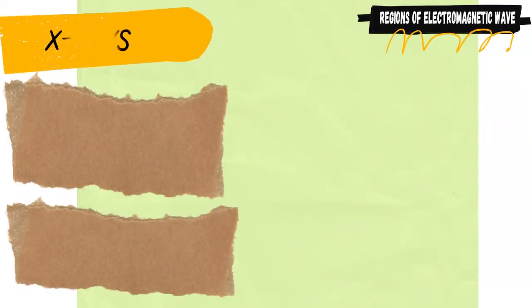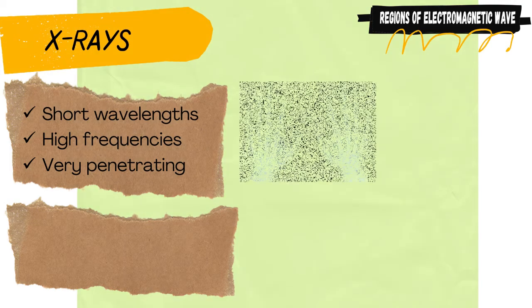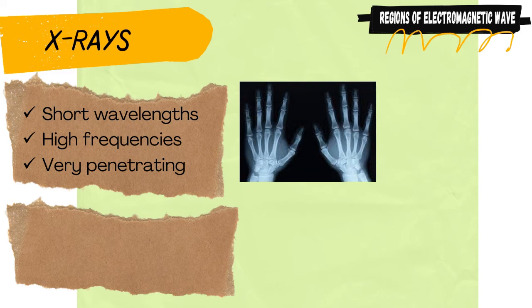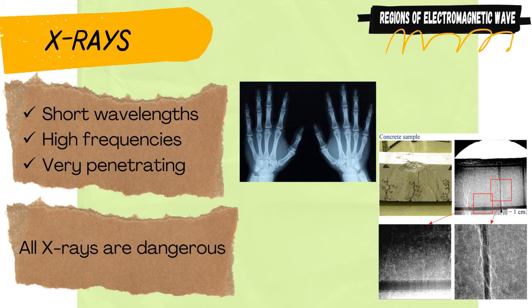X-rays have short wavelengths and high frequencies and are very penetrating. They are produced by the rapid acceleration of electrons in X-ray machines that collide with atoms, causing those atoms to emit X-rays. X-rays with longer wavelengths can penetrate through flesh but not bone and are used in X-ray photography to help doctors look inside the body. X-rays with shorter wavelengths can penetrate through metal and are used in industry to inspect welded joints or faults. All X-rays are dangerous because they can damage living cells and can cause cancer.